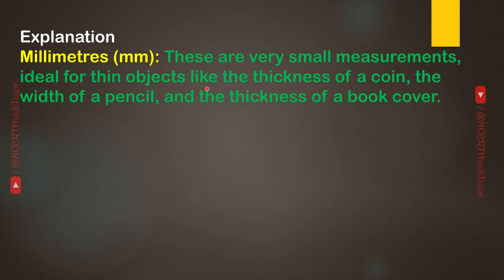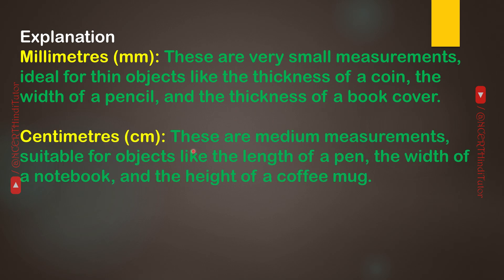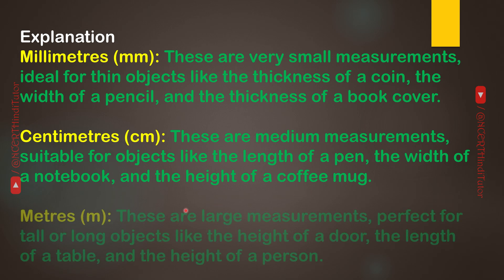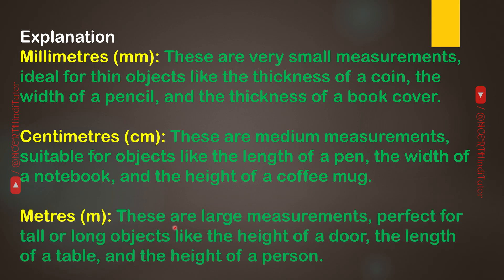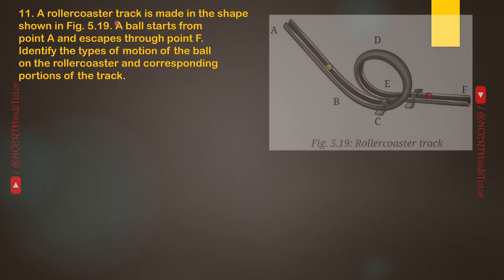Explanation: Millimeters are very small measurements, ideal for thin objects like the thickness of a coin, the width of a pencil, and the thickness of a book cover. Centimeters are medium measurements, suitable for objects like the length of a pen, the width of a notebook, and the height of a coffee mug. Meters are large measurements, perfect for tall or long objects like the height of a door, the length of a table, and the height of a person.